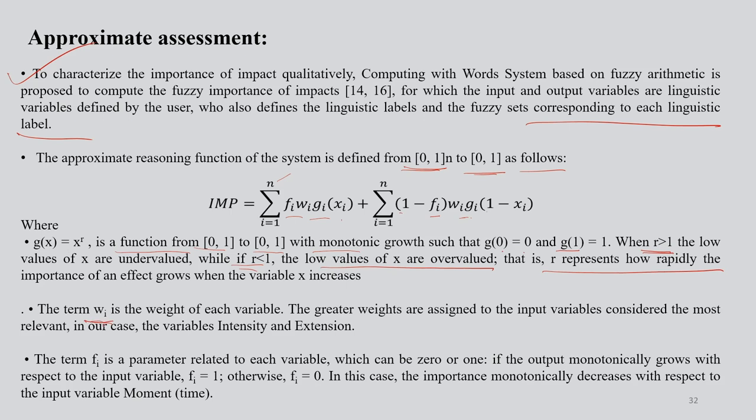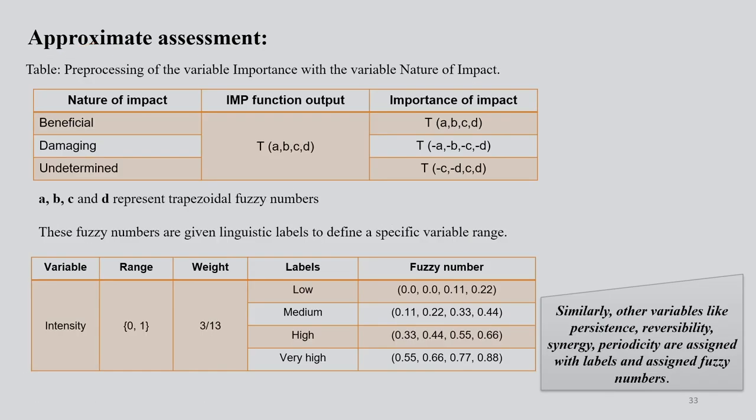The term w_i is the weight of each variable - greater weights are assigned to input variables considered most relevant, like intensity and extent. The term f_i is a parameter related to each variable which can be 0 or 1. If output monotonically grows with respect to input variable, f_i = 1. If importance monotonically decreases with respect to input variable like time, f_i = 0. With time, the importance of the factor decreases, and all these give you an approximate assessment of the event.